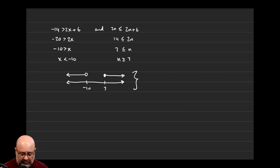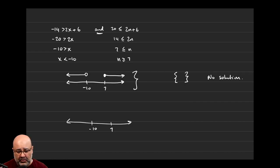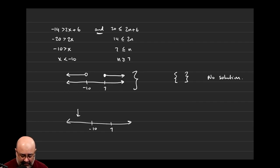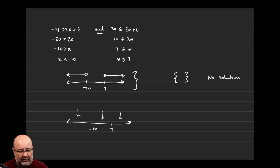How would you graph no solution as an answer on the number line? That's my number line — there's negative 10 here and 7 here; these were numbers or points of interest. How would you indicate that there is no solution anywhere? You cannot shade this region, you cannot shade this region, you cannot shade this region, because that would mean those are the solutions.